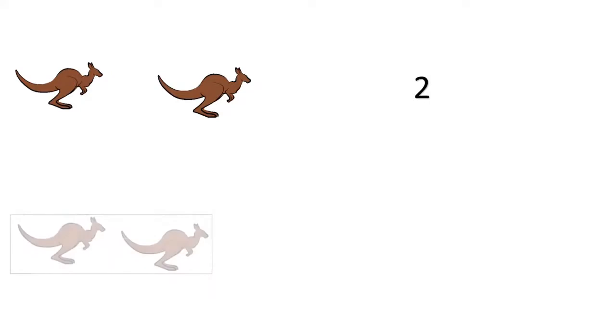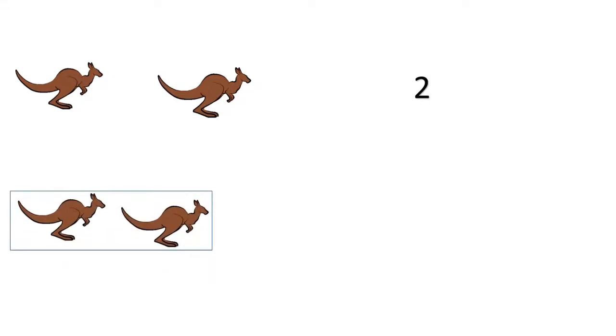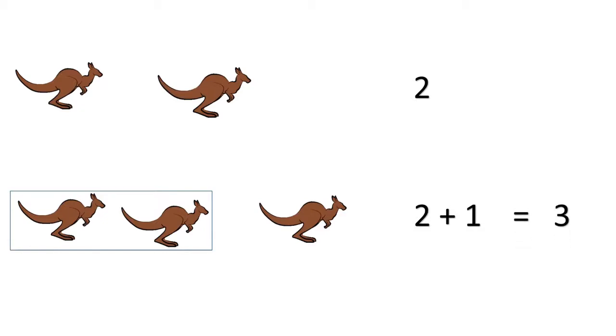Children, in the rhyme we saw first there were only two kangaroos. Later we saw one more kangaroo joined, so now tell me two plus one is how much? Two plus one is equal to three. We added!